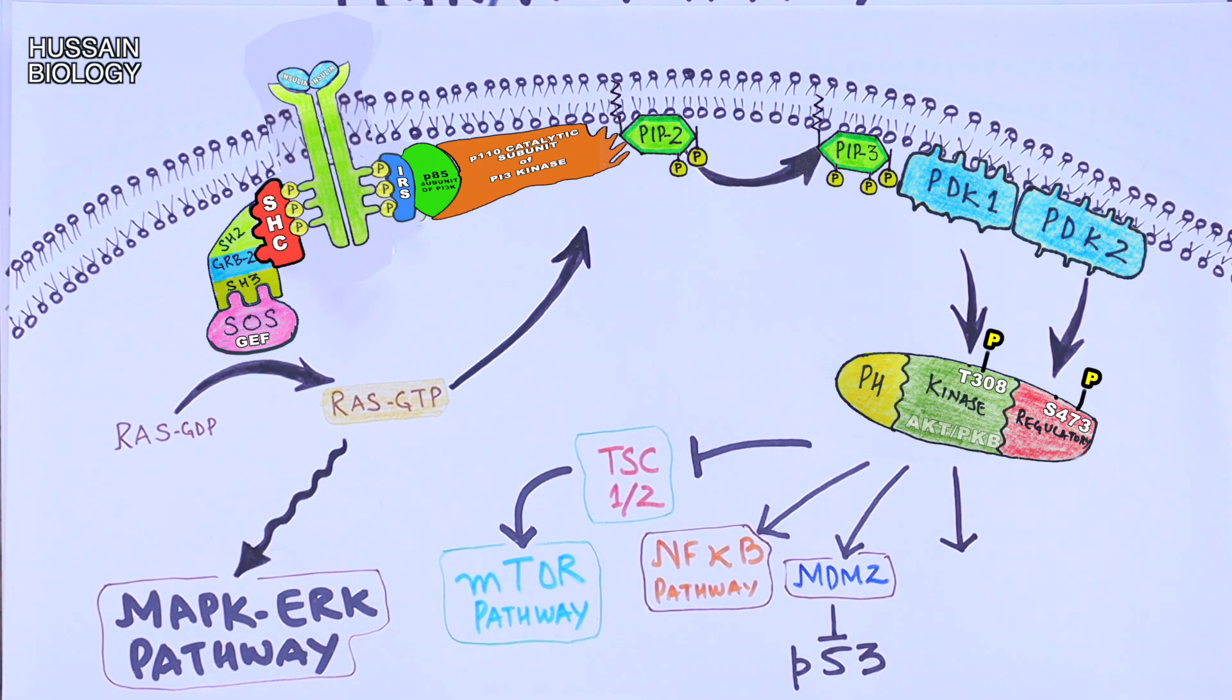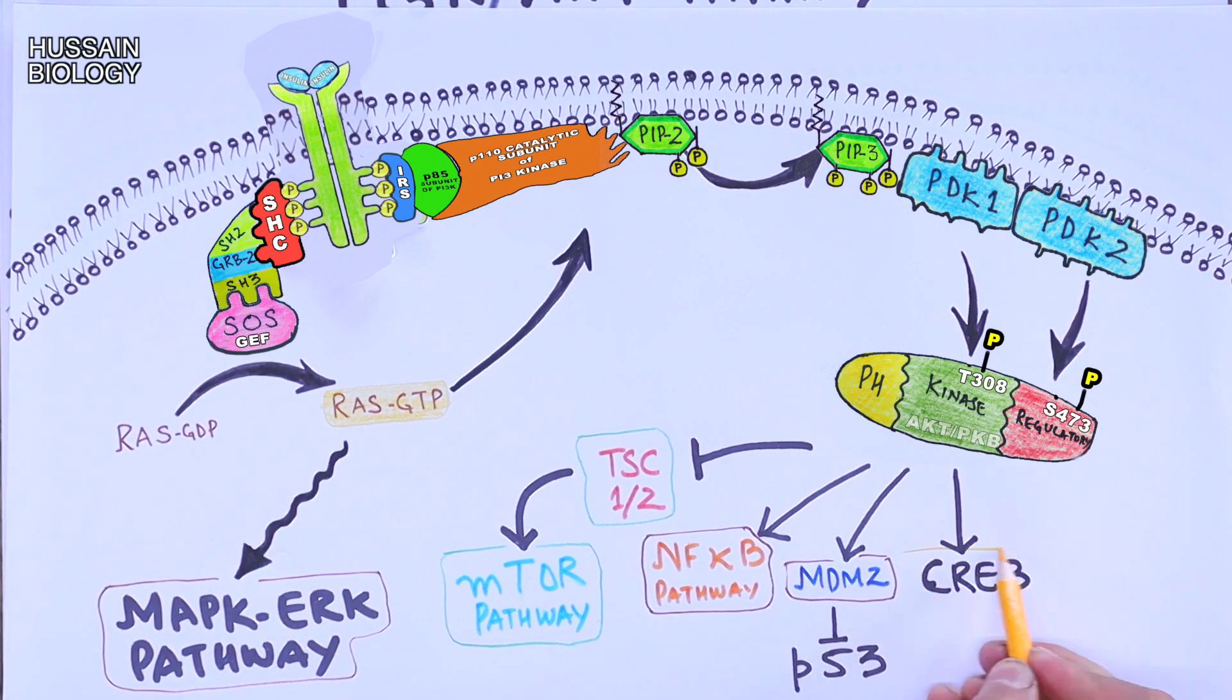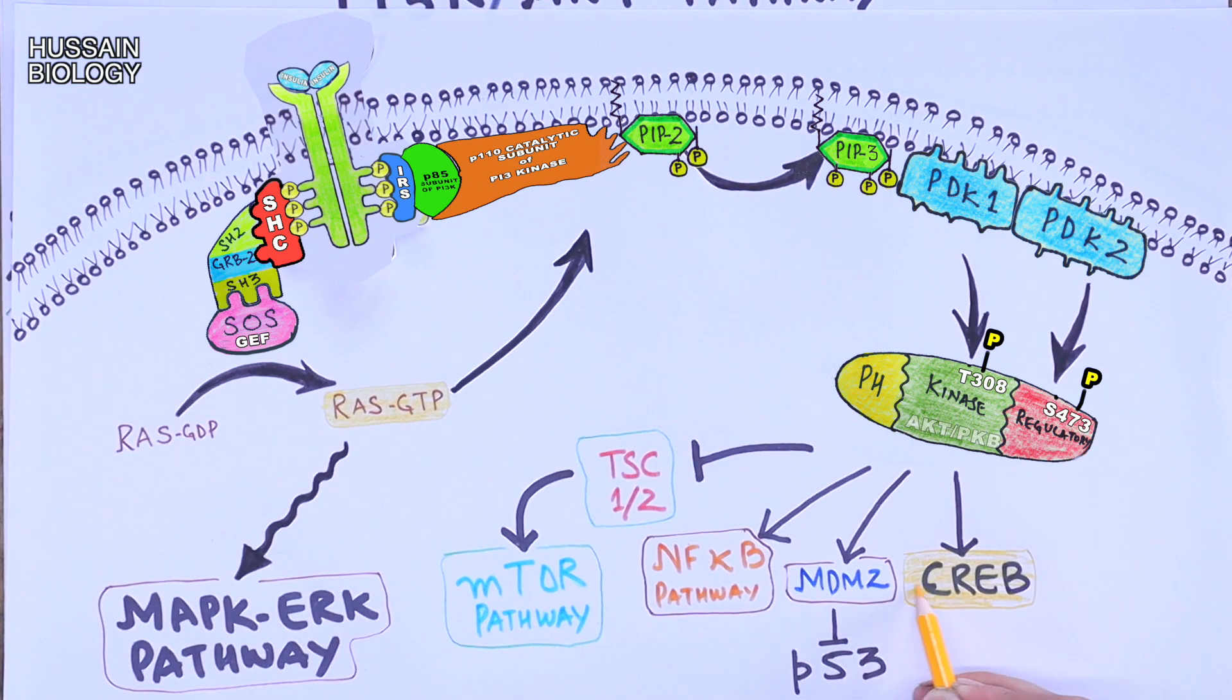Furthermore, AKT or PKB also phosphorylates CREB molecule, which then binds CBP and ultimately gets into nucleus for transcription of target genes.